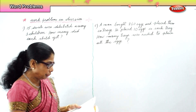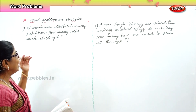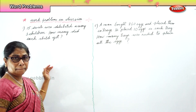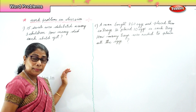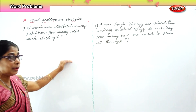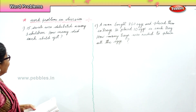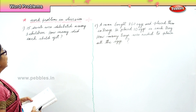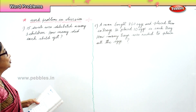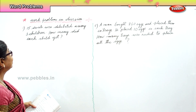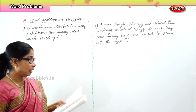Two sums are given to you. First we will read the problem, we see what the statement is, then we do the working. Now let's look at the first one: fifteen sweets were distributed among three children — how many did each get?